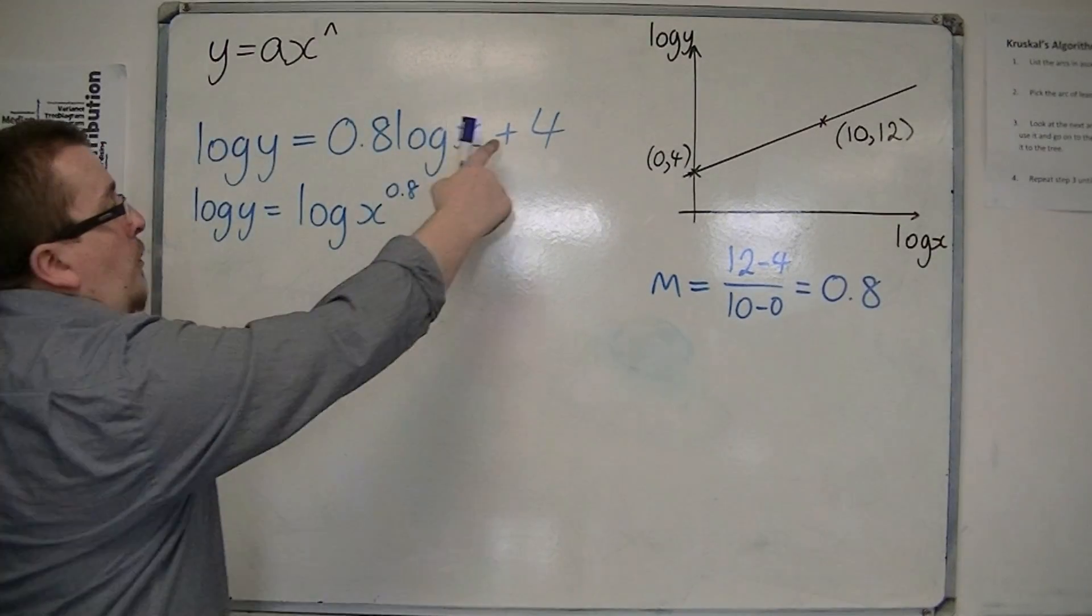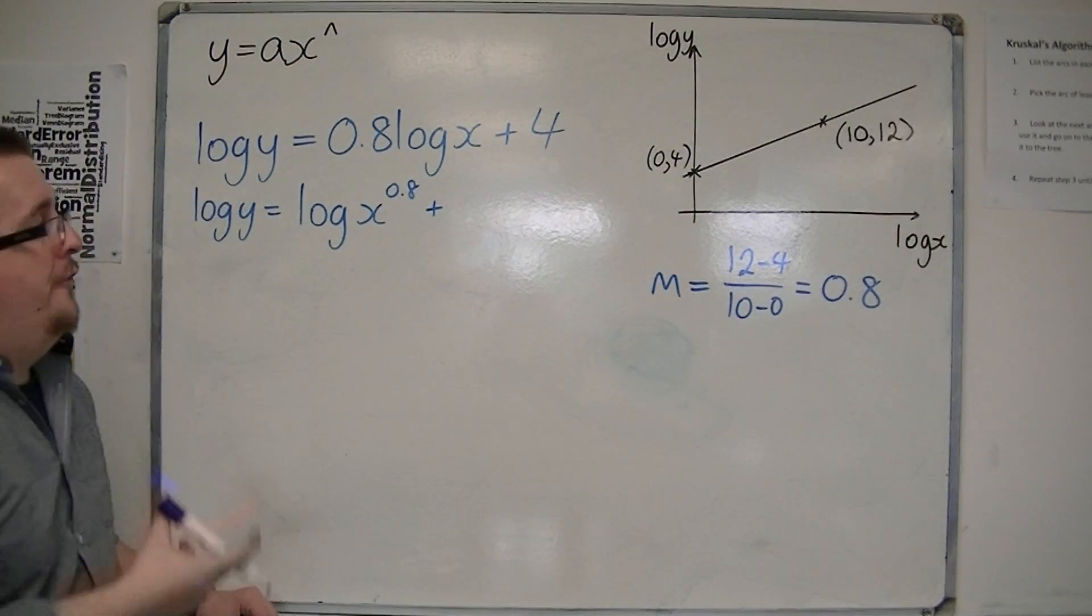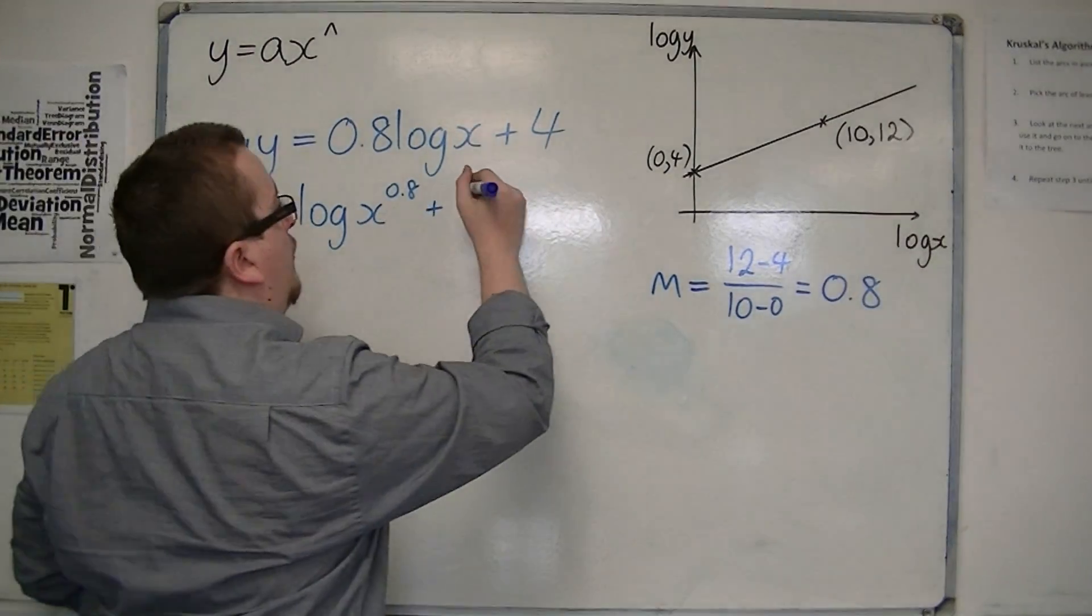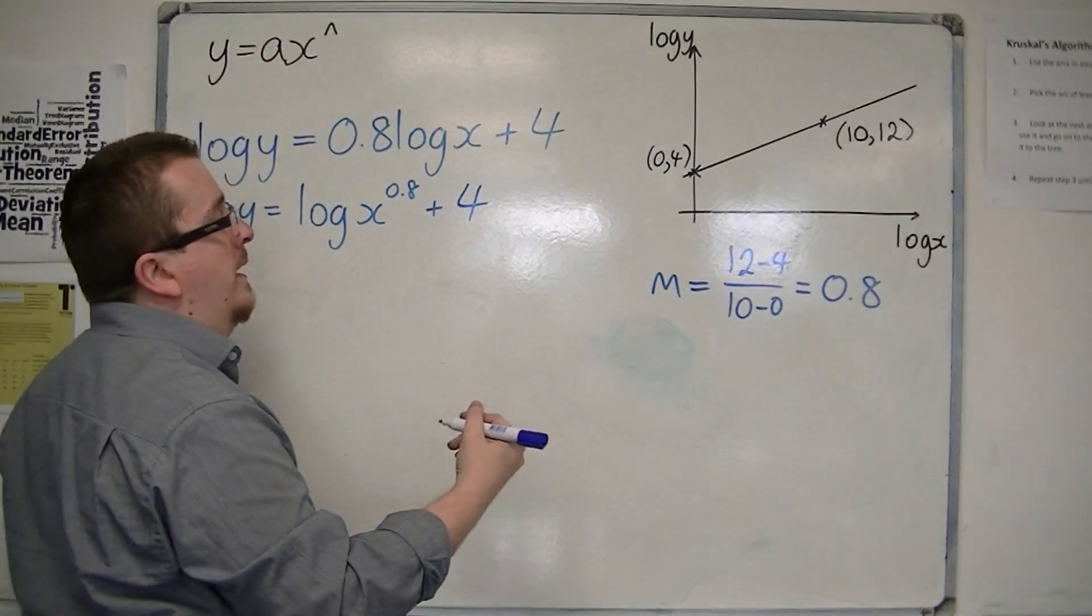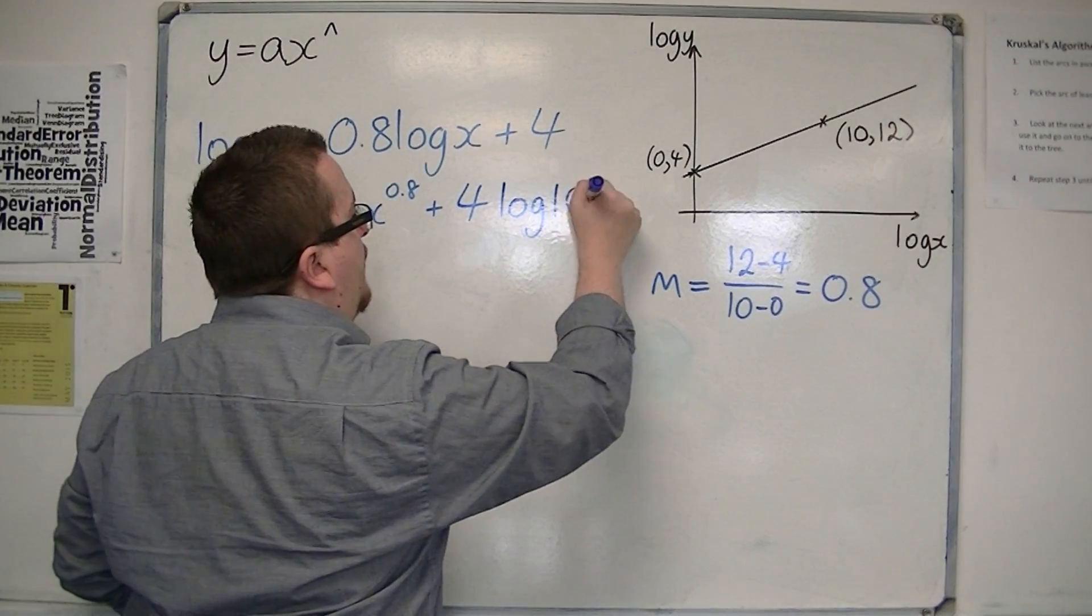Now, the 4, what can I write that as? Well, 4 is 4 times 1, and 1 is log base 10 of 10.